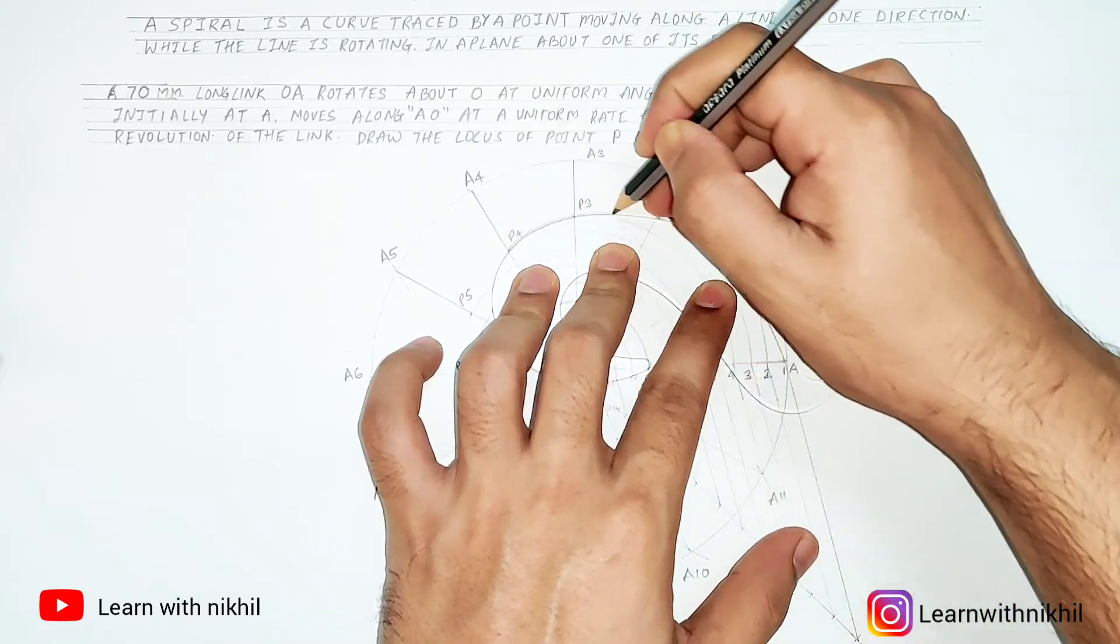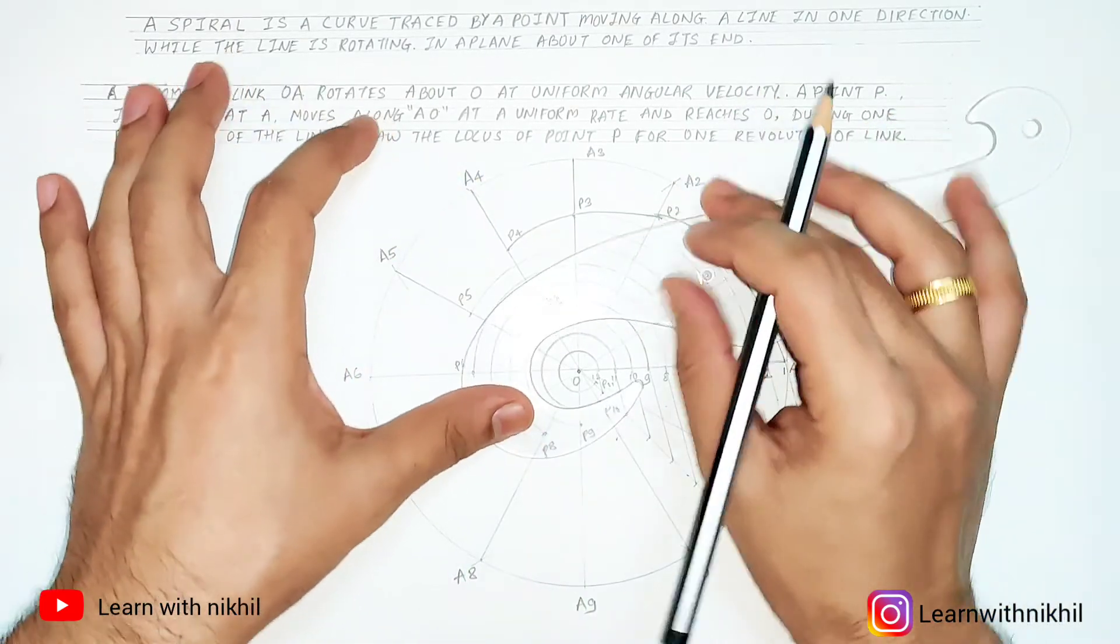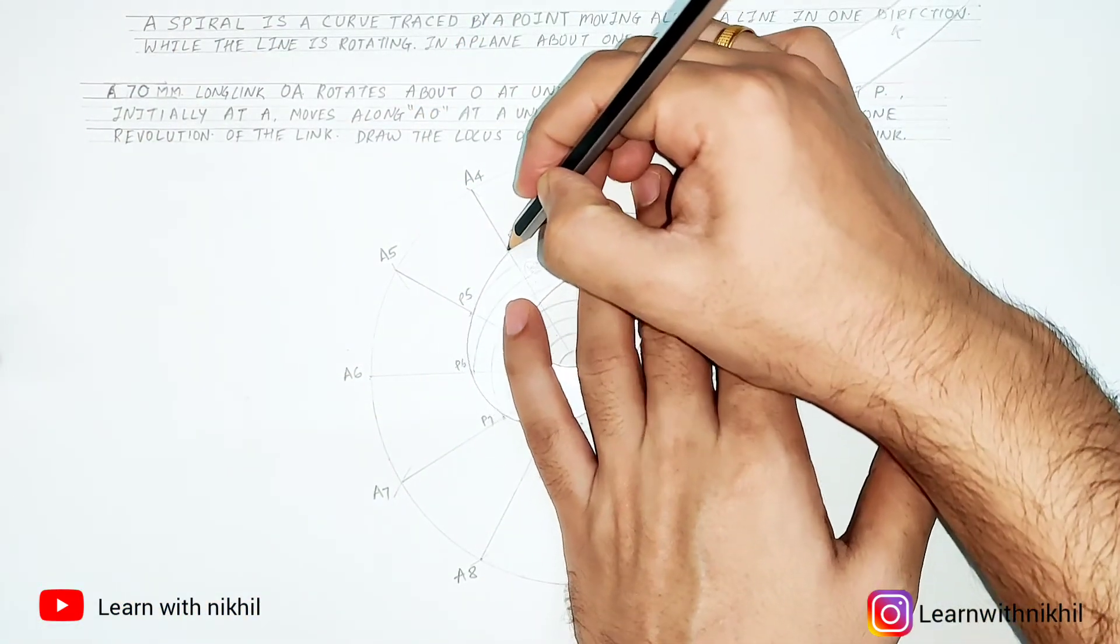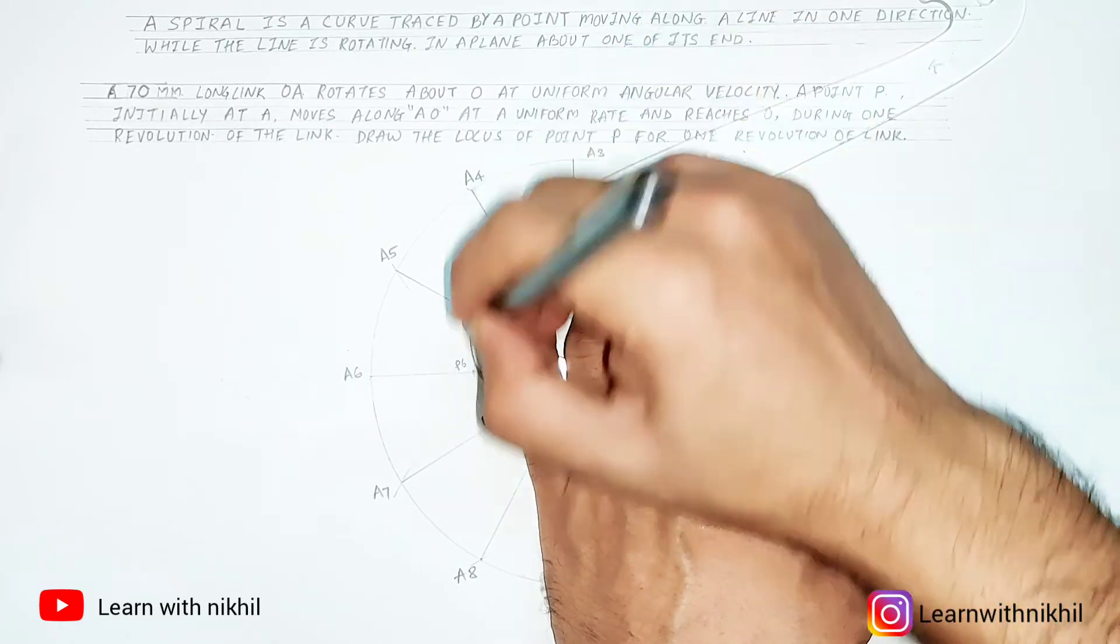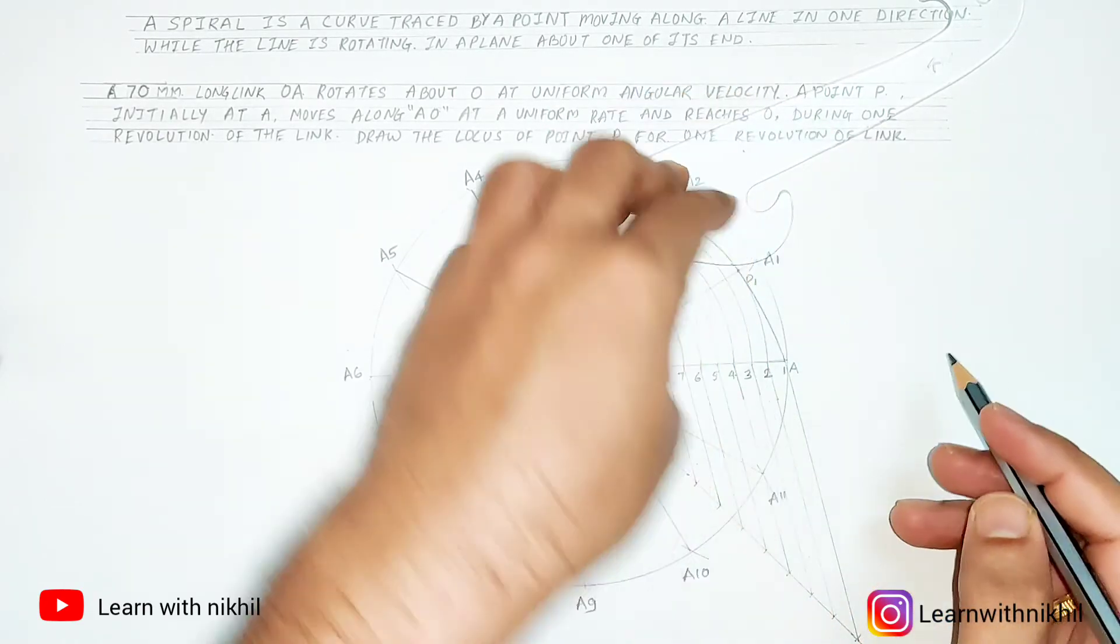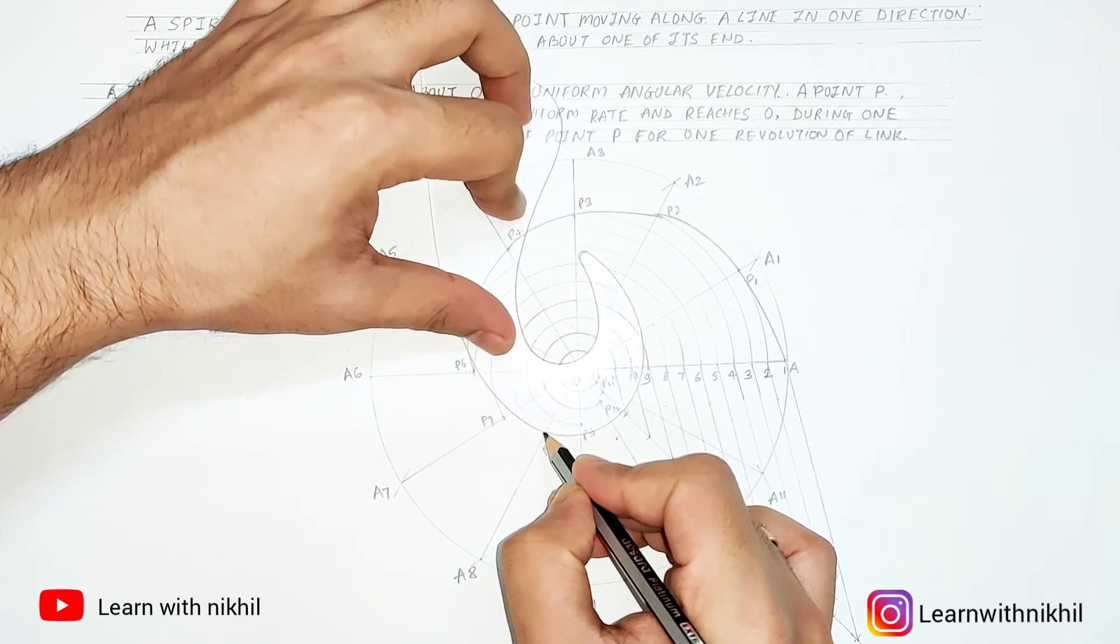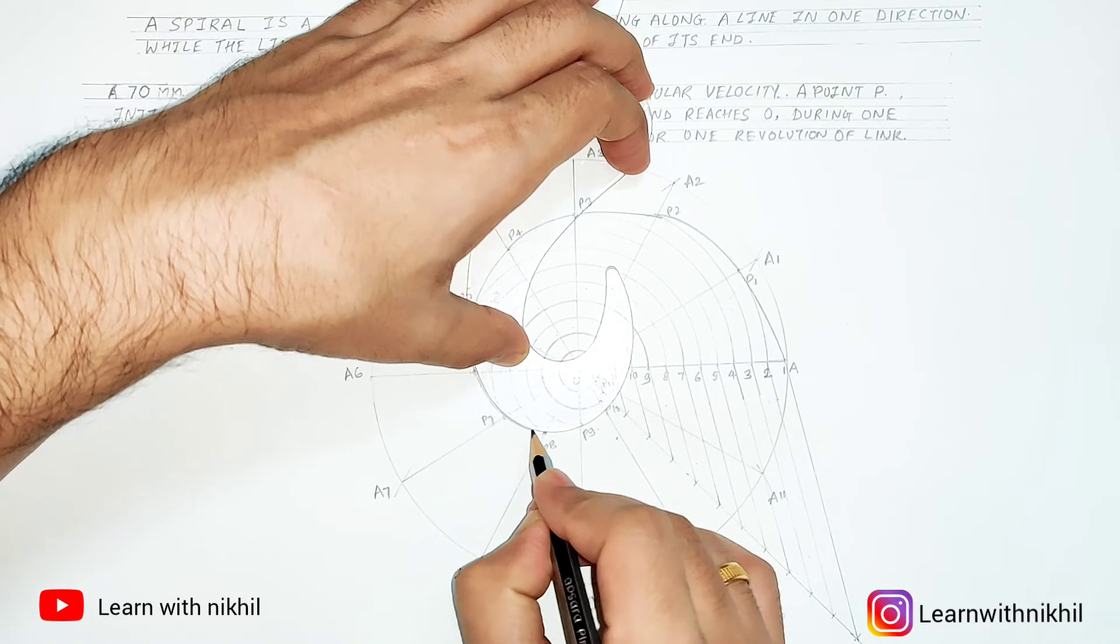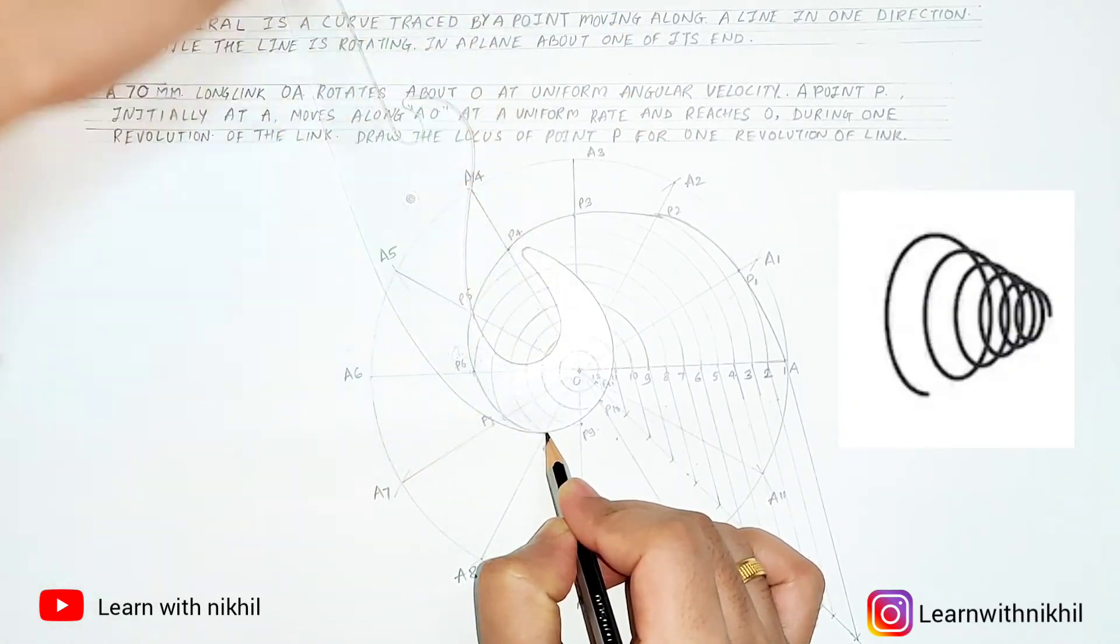So as said at the start, spiral is a curve, it's like a spring. So you have to draw a spring, the path of a spring you have to draw. For that you have been given a radius of a circle, and this is the type of a spring which has one side as the bigger radius and one side as a smaller or a zero radius.